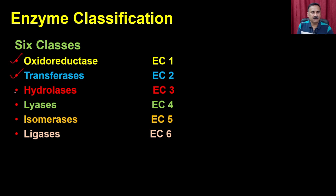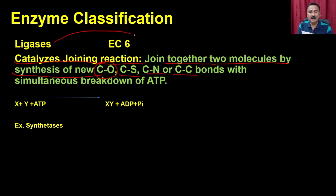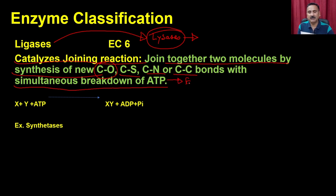We have discussed oxidoreductases, transferases, hydrolases, lyases, and isomerases. Now we discuss ligases, belonging to EC class 6. Ligases catalyze joining reactions — joining two molecules by synthesizing a new bond, forming C-O, C-S, C-N, or C-C bonds. Ligases are opposite to lyases: lyases break molecules apart, while ligases synthesize new molecules.